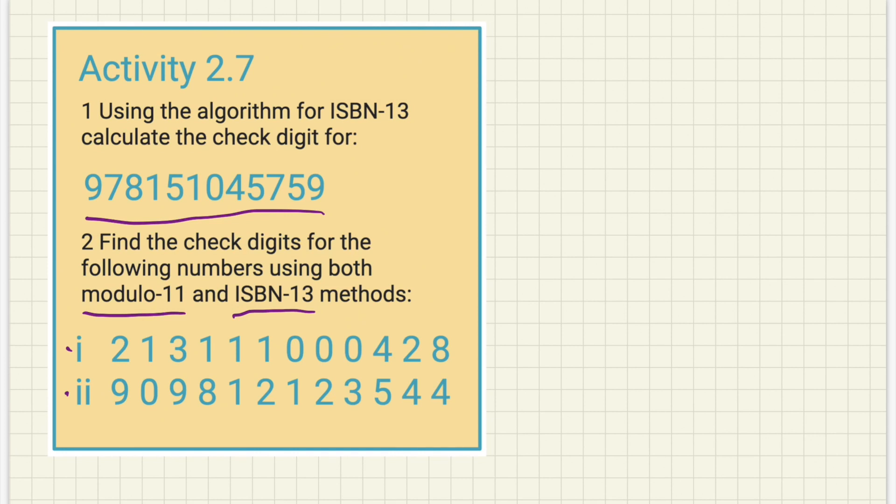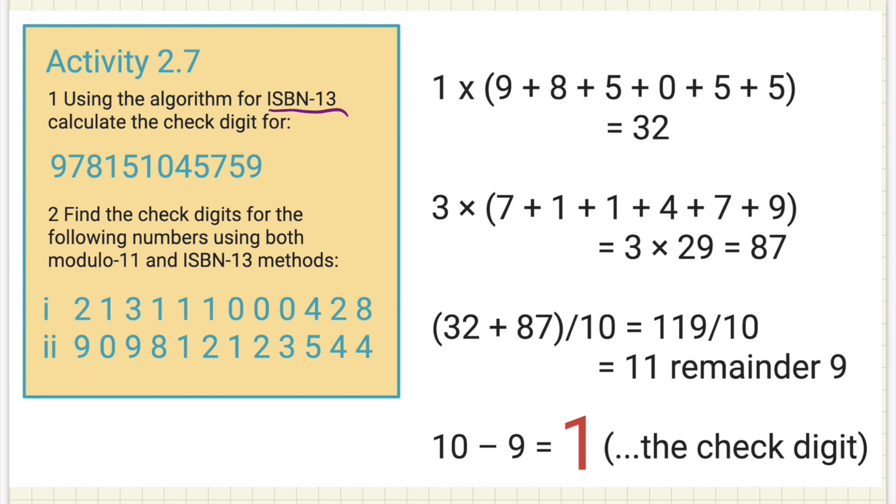Let's start with activity one. So with ISBN-13, what it's going to do, it's going to first of all take all the odd numbers: 1, 9, 8, 5, 0, 5, 5, and it's going to multiply them by one. It's going to add them all together. I'm going to multiply them by one, i.e. the one in 13, and then we're going to get a total of 32.